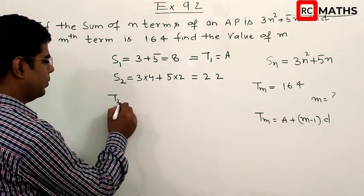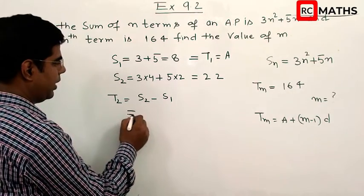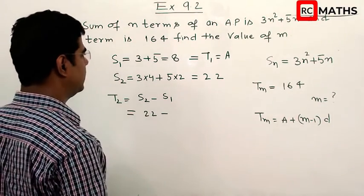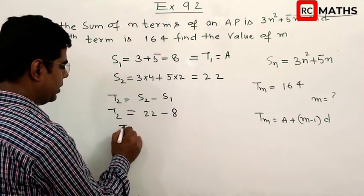So T2 will be S2 minus S1. S2 is 22, S1 is 8, so T2 is 14.